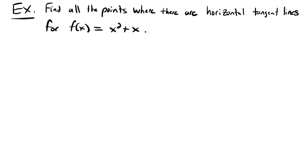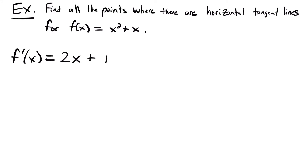Now let's look at how to find horizontal tangent lines, which are tangent lines that have a slope of 0. We want to find all the points where there are horizontal tangent lines for the function x squared plus x. To find horizontal tangent lines, we first take a derivative, and then set it equal to 0, because the derivative is slope. We solve for x to find which x values give a slope of 0. So f prime of x equals 2x plus 1.